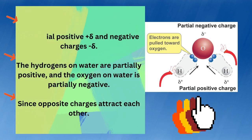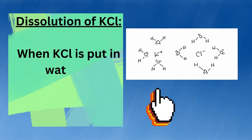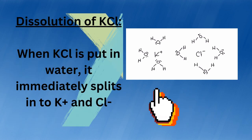Since opposite charges attract each other, dissolution of KCl: When KCl is put in water, it immediately splits into potassium ion and chloride ion.